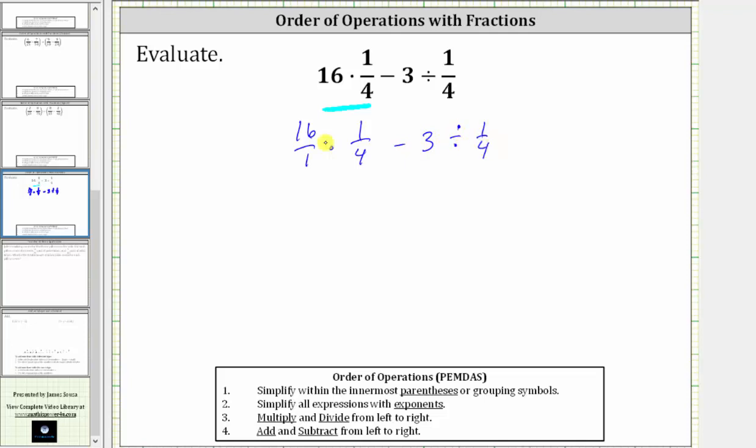Notice there's a common factor of four between 16 and four, or a common factor of four between the numerator and denominator that we can simplify out before multiplying. 16 divided by 4 is 4, and therefore the 16 simplifies to 4. And 4 divided by 4 is equal to 1, and therefore the 4 in the denominator simplifies to 1.